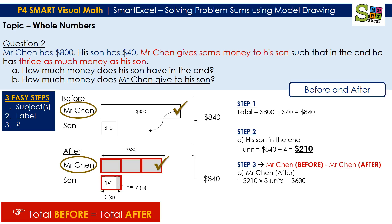So from here, what do we do? We take the before of Mr. Chen, we minus it with the after of Mr. Chen. That's the last step. $800 minus $630, which equals $170.